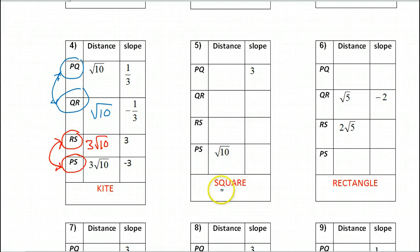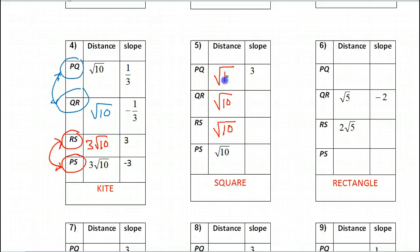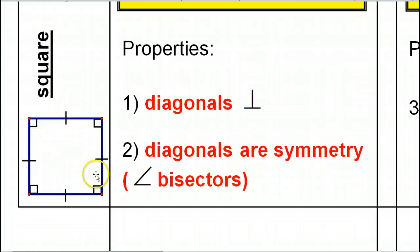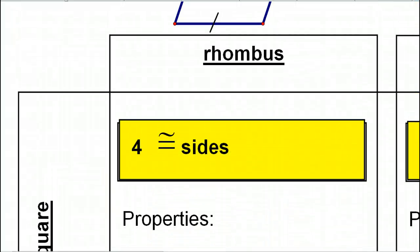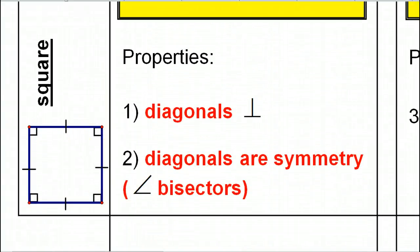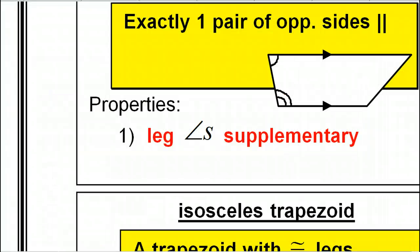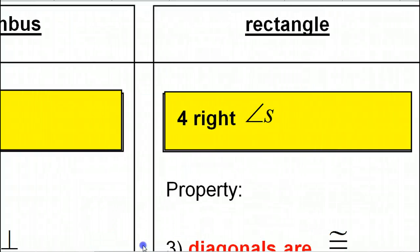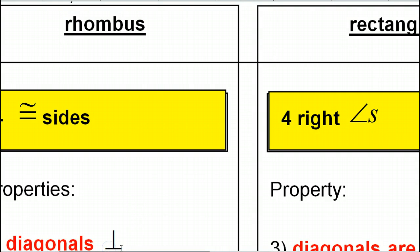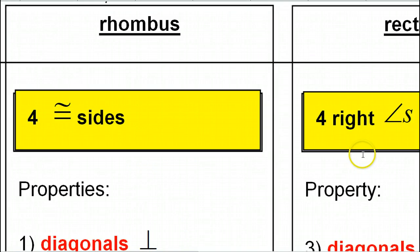Number five is a square. One thing we know about a square is that all four sides are congruent. So if we know that one side is √10, that means all four sides must be √10. A square not only has four congruent sides — which makes it a rhombus — but it also has four right angles, because a square is also a rectangle. So a square has four congruent sides and four right angles.